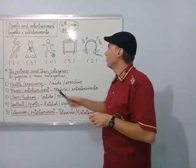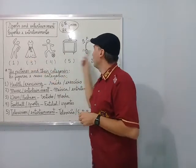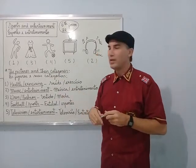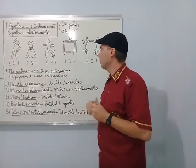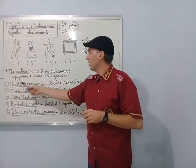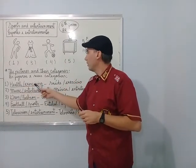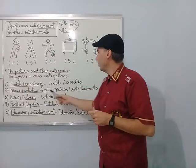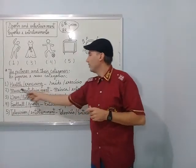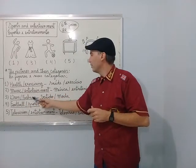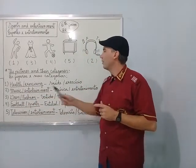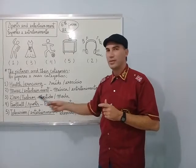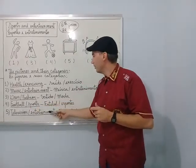Now we have numbered these five pictures according to their categories. Let's repeat the pictures and their categories: Health — Exercising. Music — Entertainment. Dress — Fashion. Football — Sports. Television — Entertainment.